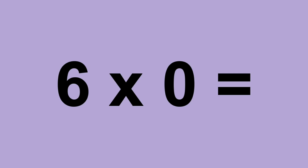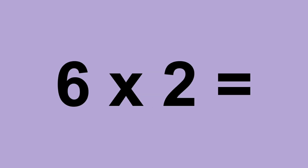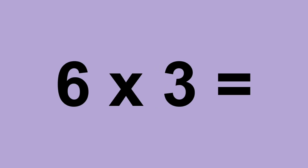Six times zero equals zero. Six times one equals six. Six times two equals twelve. Six times three equals eighteen.